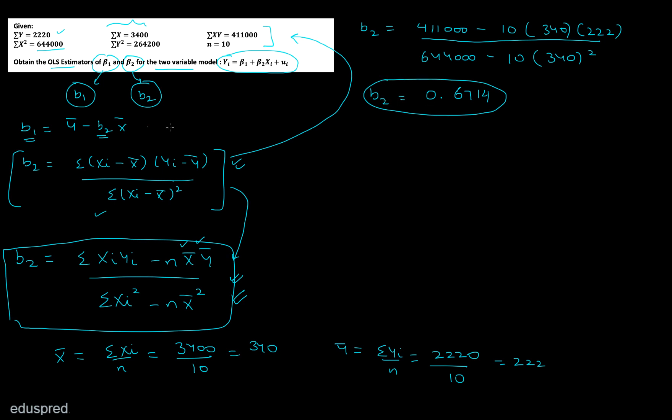Now once you know the value of B2 it's quite simple to find the value of B1. B1 equals y bar minus B2 x bar. I already know that y bar is 222, so 222 minus 0.6714 multiplied with x bar that is 340. And if you solve this you will get that B1 equals minus 6.276. And that's it.